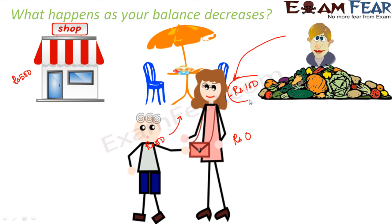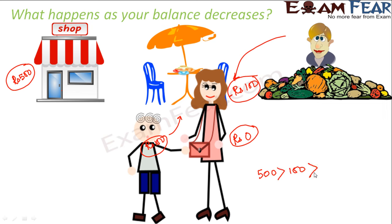Now what is happening gradually? As you move from the shop to the cafe to the vegetable vendor, your balance was gradually decreasing. When you started from home it was 500; by the time you reached the cafe it was 100; by the time you reached the vendor it was zero; and by the time you came out of the vendor it was minus 100 — meaning you had to return 100 rupees to the vendor. This shows that 500 was greater than 100, 100 was greater than zero, and zero was greater than minus 100. So as the value decreases, you move towards the negative numbers from the positive numbers.